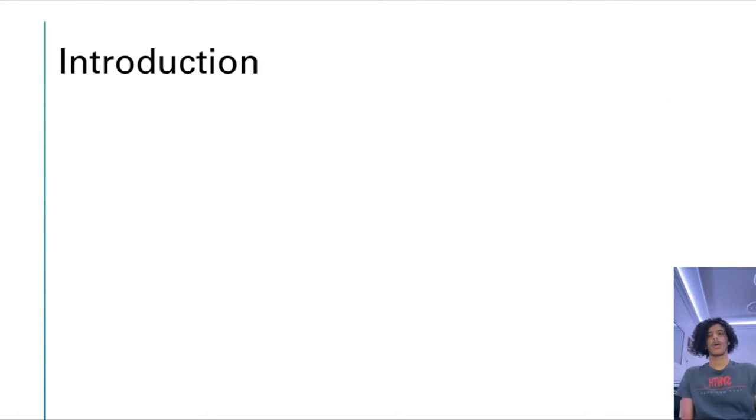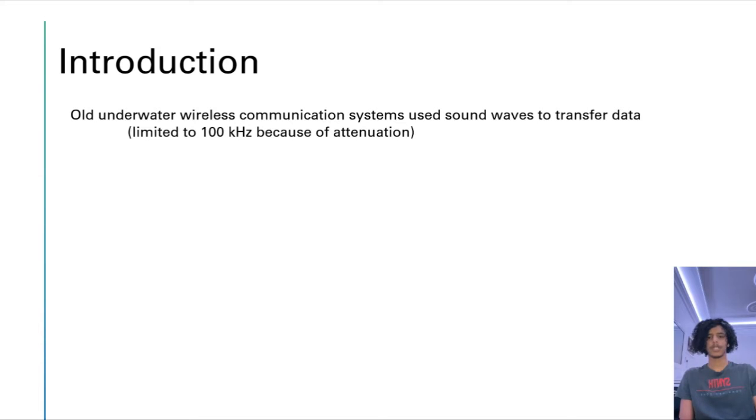You might already know that we have underwater wireless communication, but how is it done and what are its weaknesses? In the old underwater wireless communication systems, they use sound or acoustic waves to transfer data. They are only limited to 100 kHz because of attenuation with distance and they have slow propagation so it will have a large time delay.